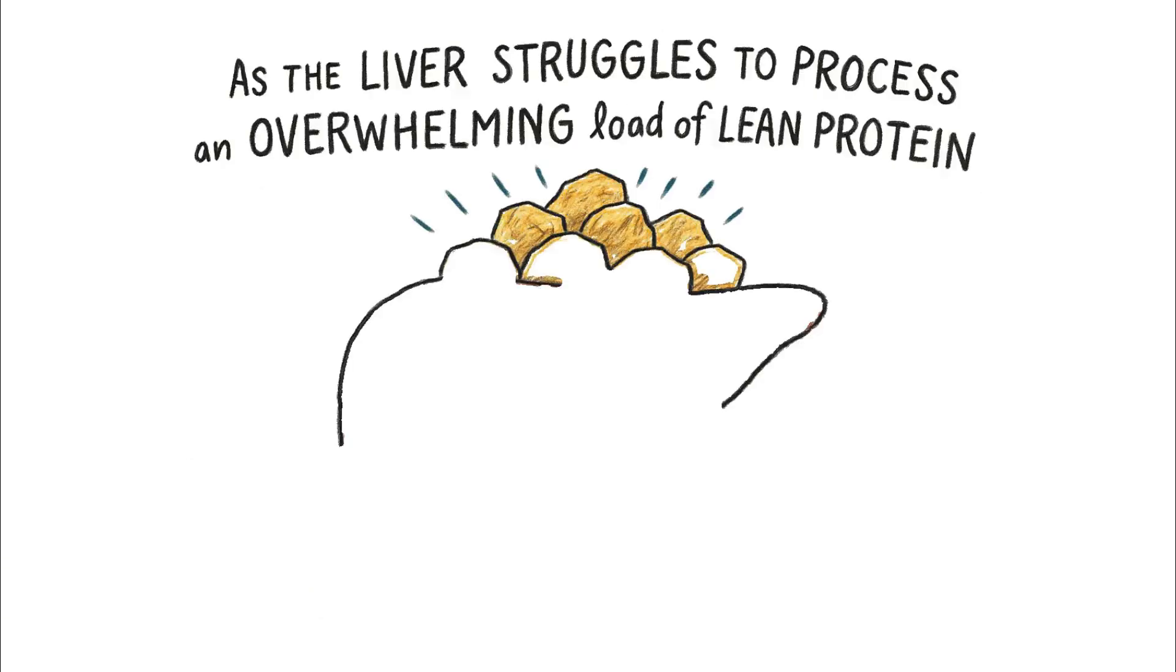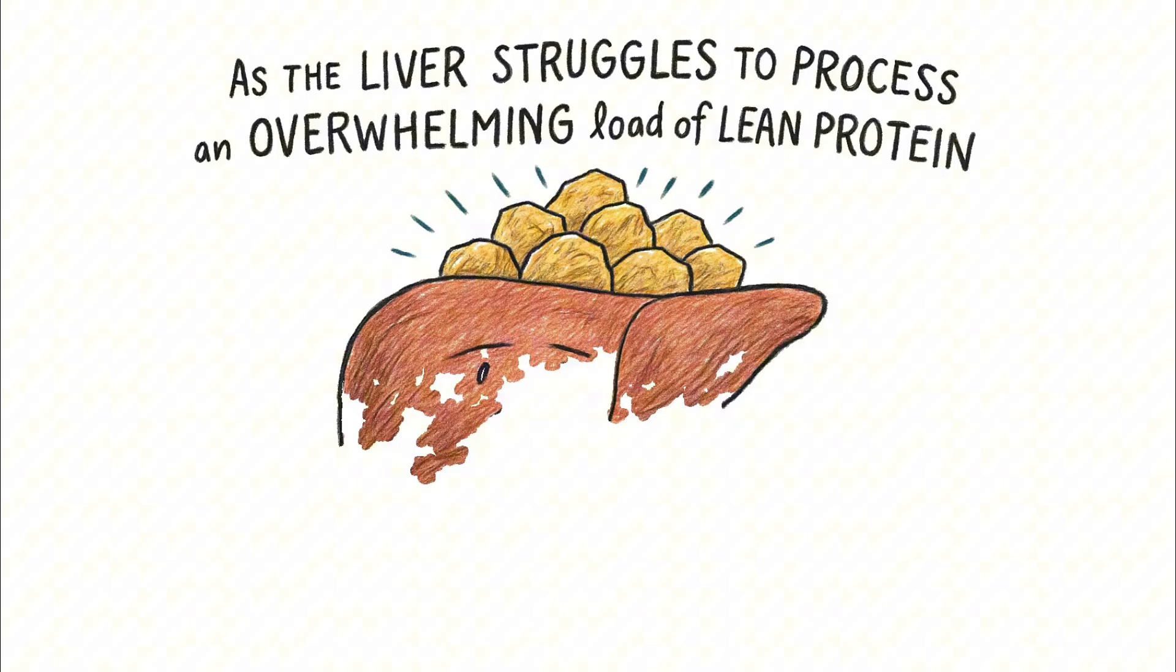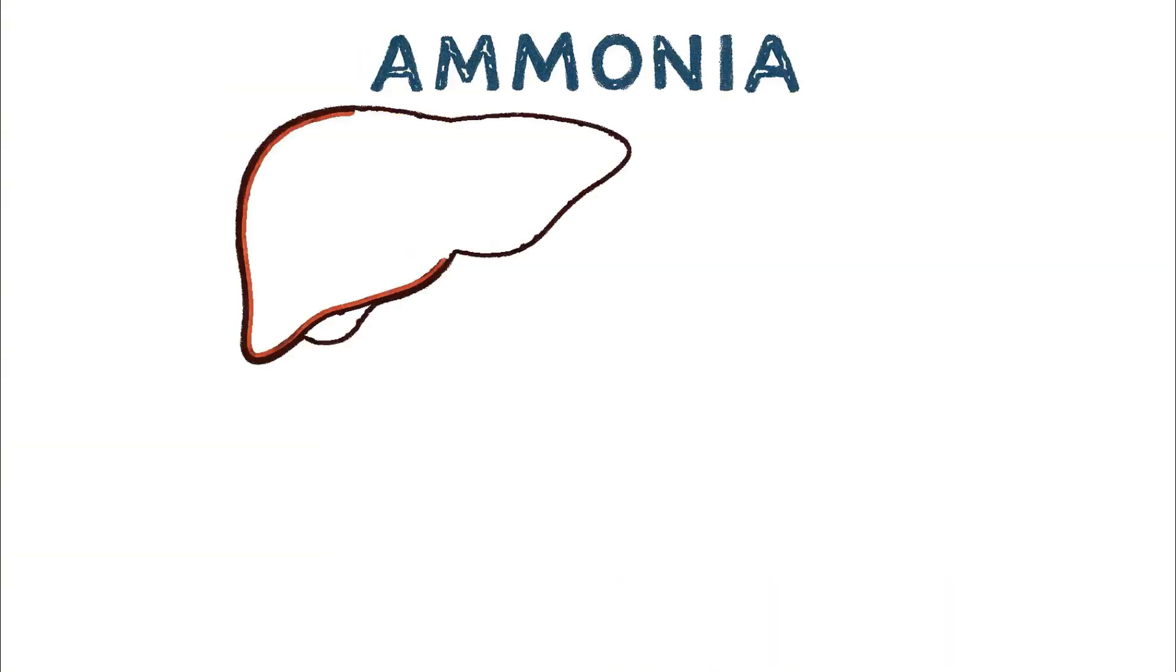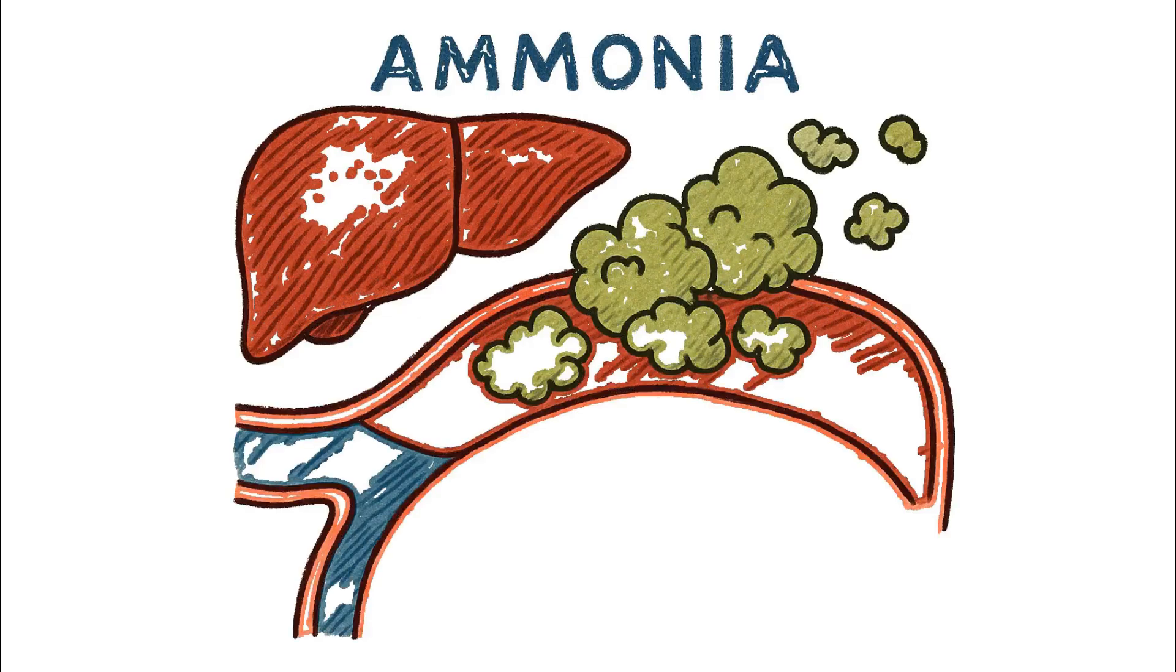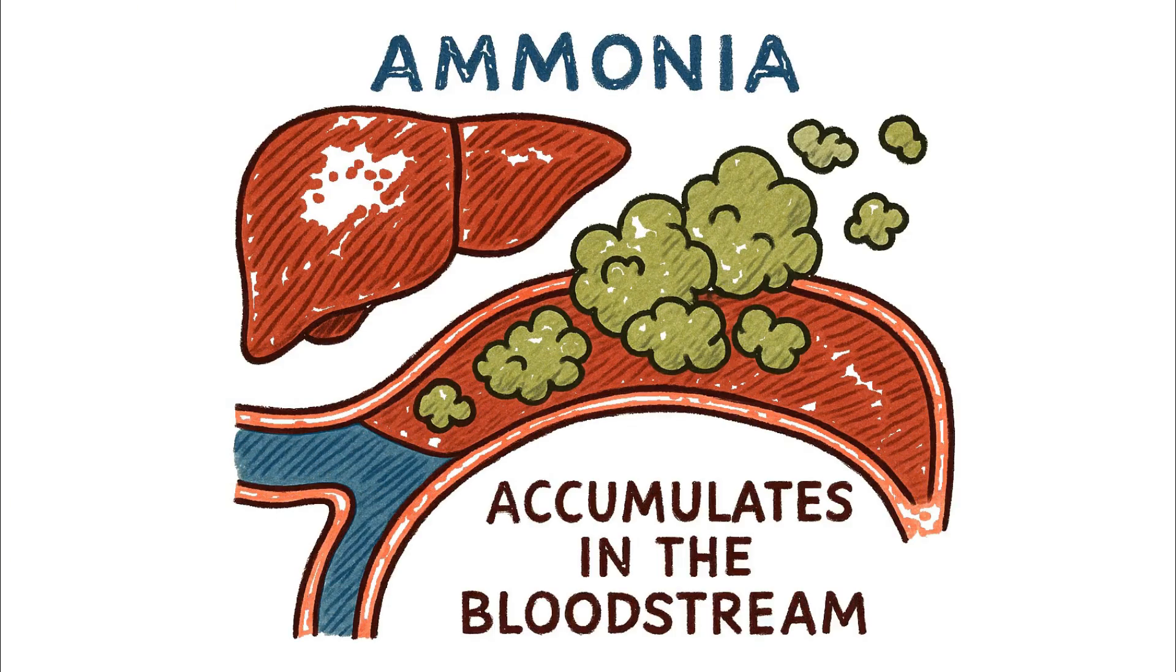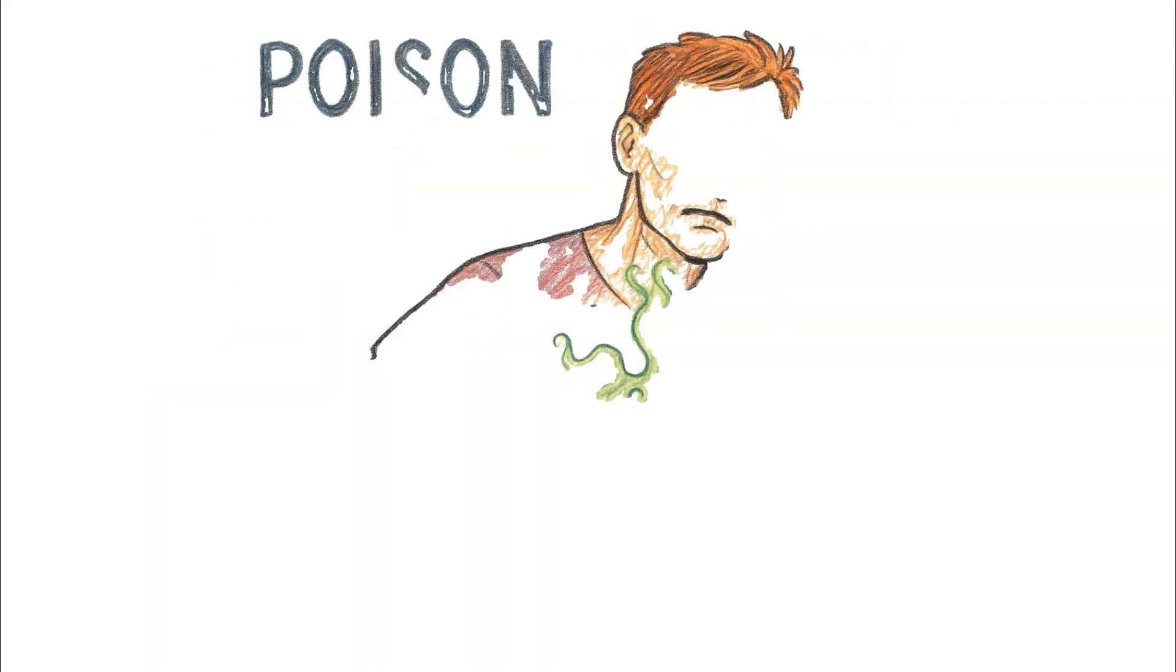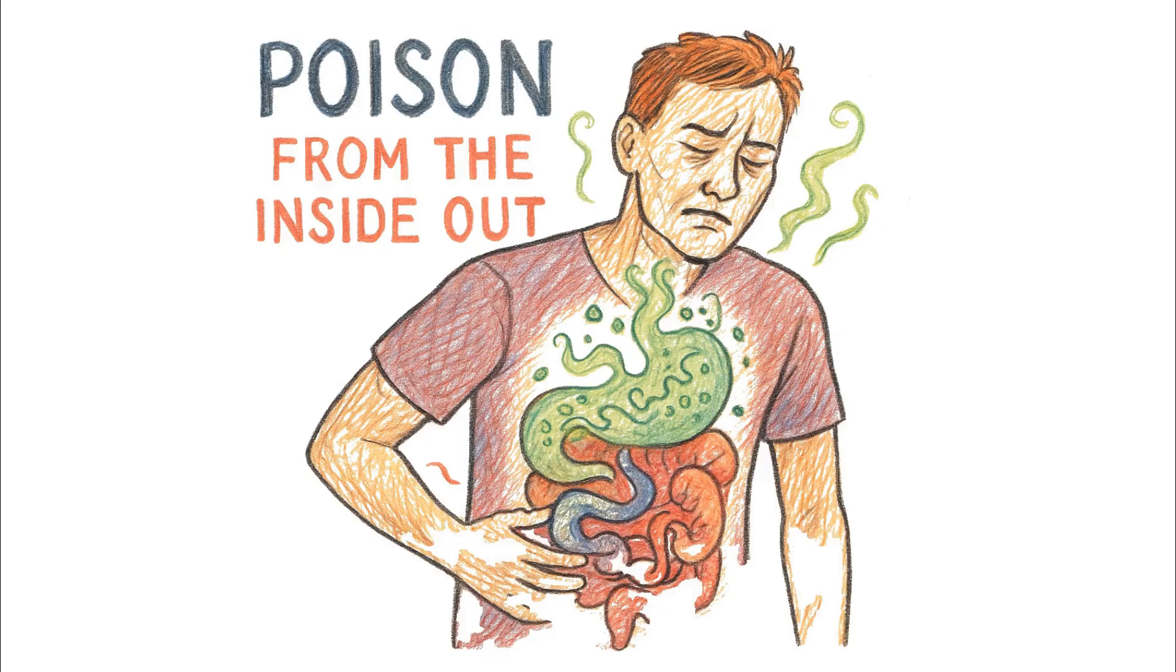As the liver struggles to process an overwhelming load of lean protein, it fails to properly convert the toxic byproducts. Specifically, ammonia, a natural result of protein metabolism begins to accumulate in the bloodstream. This is not a gentle process. It's a rising tide of poison. The body is effectively poisoning itself from the inside out.